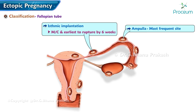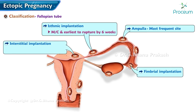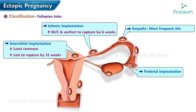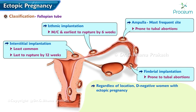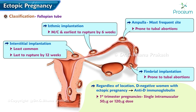Isthmic implantation, fimbrial implantation, and interstitial implantation — the least common — ruptures last, at around 12 weeks. Ampullary and fimbrial implantations are prone to tubal abortions. Regardless of location, Rh-negative women with an ectopic pregnancy are given anti-D immunoglobulin. In first trimester pregnancies, a single intramuscular 50 or 120 microgram dose is appropriate.